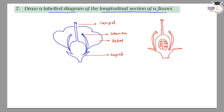Here we will make it a side view. This one is the stamen, this is the petal, and this is the sepal. So this is the longitudinal section of the flower.